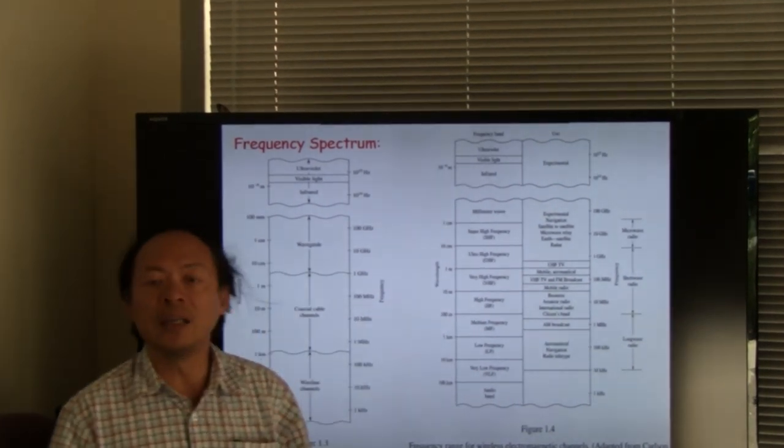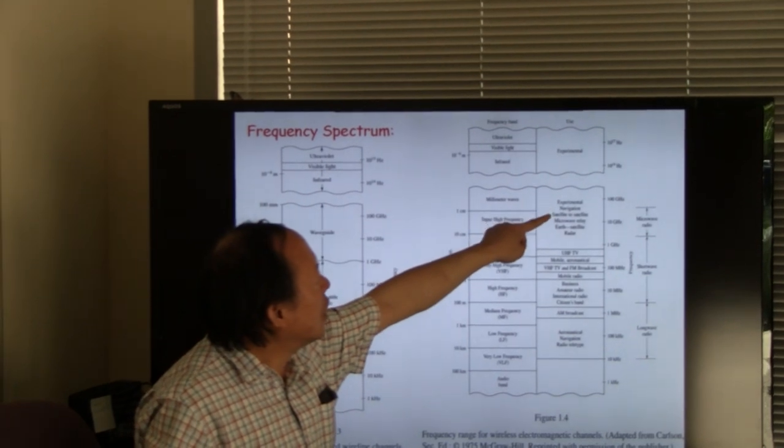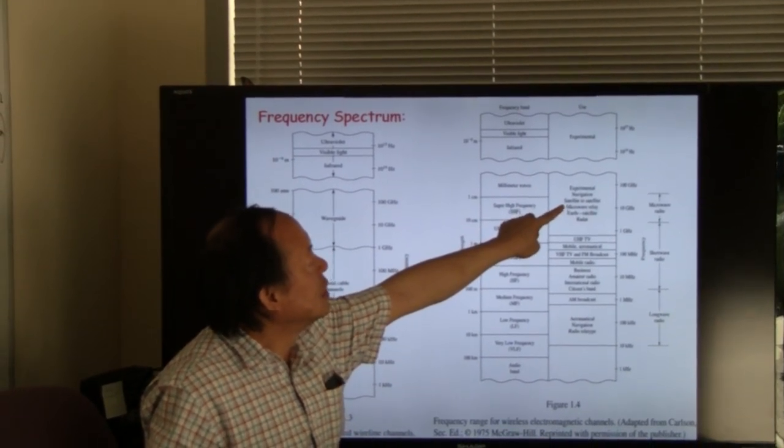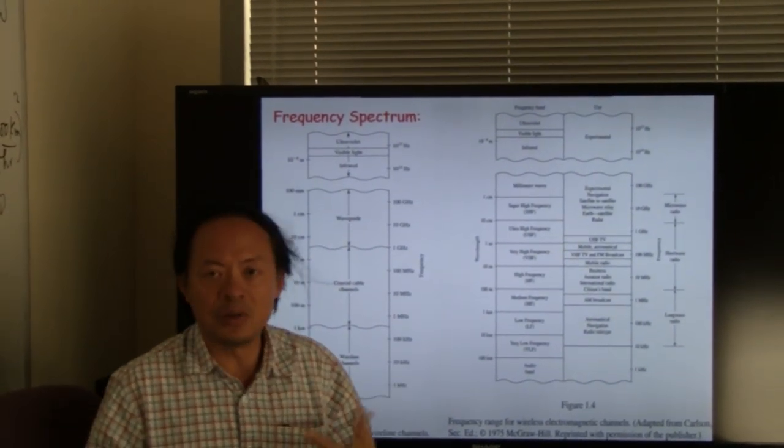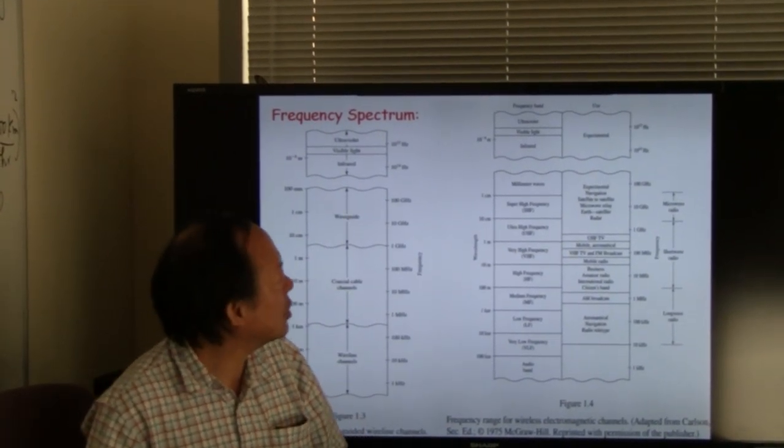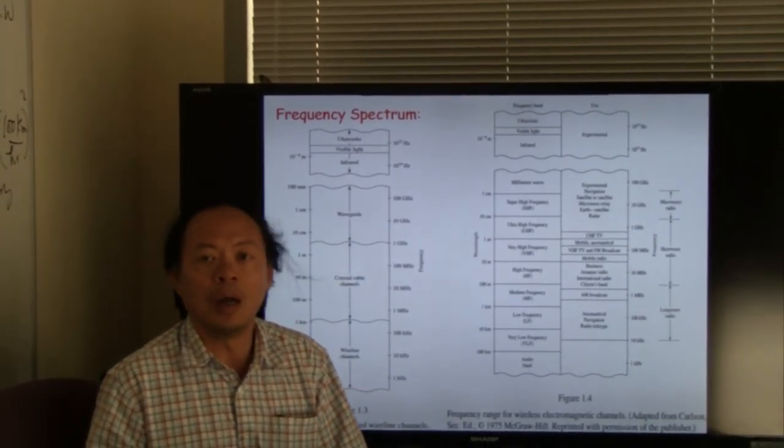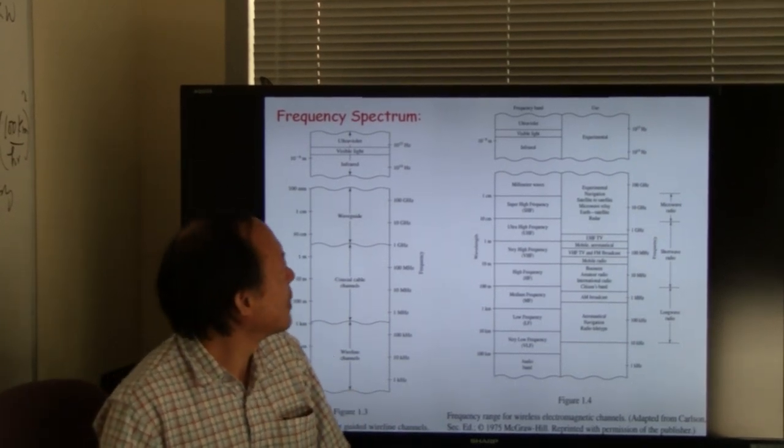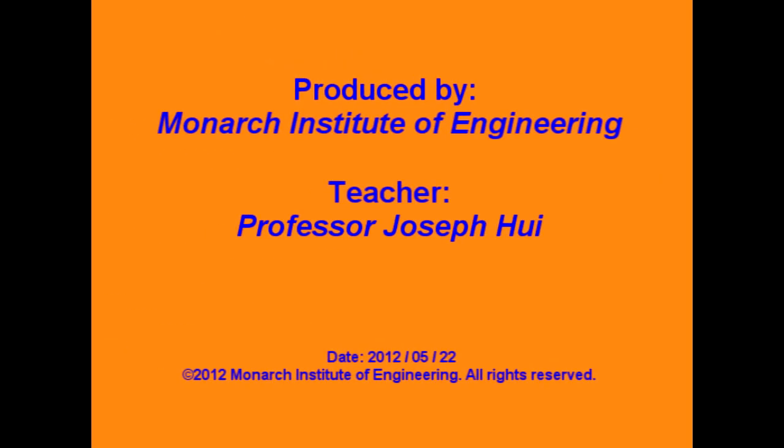Beyond that, around 10 gigahertz, most of that frequency is used in satellite and also in microwave relay. Beyond 100 gigahertz, a lot of that is in the millimeter range, which is used sometimes—around 90 gigahertz you have the military bands, and beyond that is largely experimental.